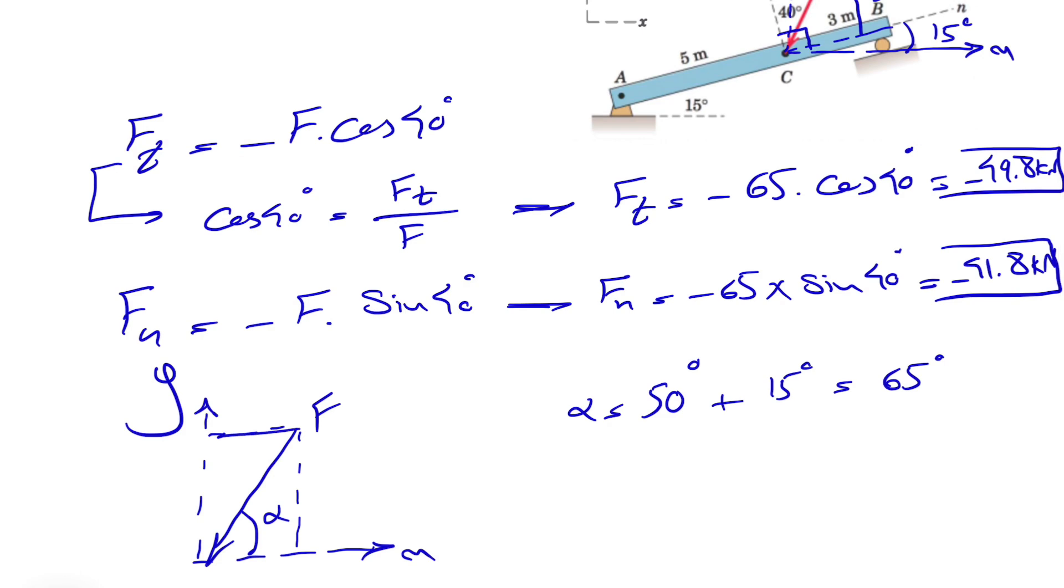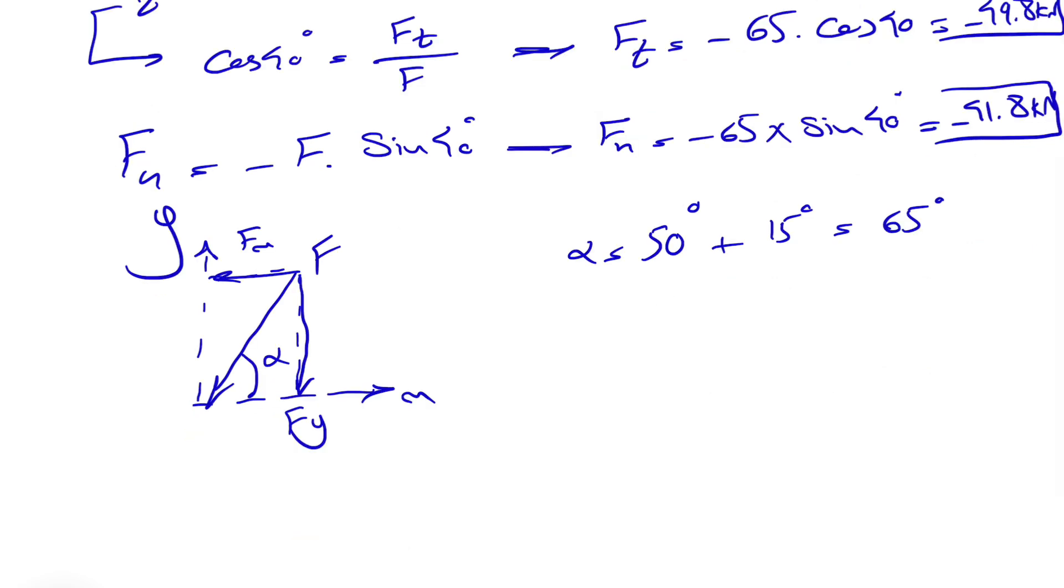That's easy enough to find the x and y component. This will be our Fx which is a negative value and we have Fy which is also a negative value. So let's find the Fx. We will have negative F times cosine of alpha, so minus 65 times cosine of 65 degrees, and this will give us minus 27.5 kilonewton.